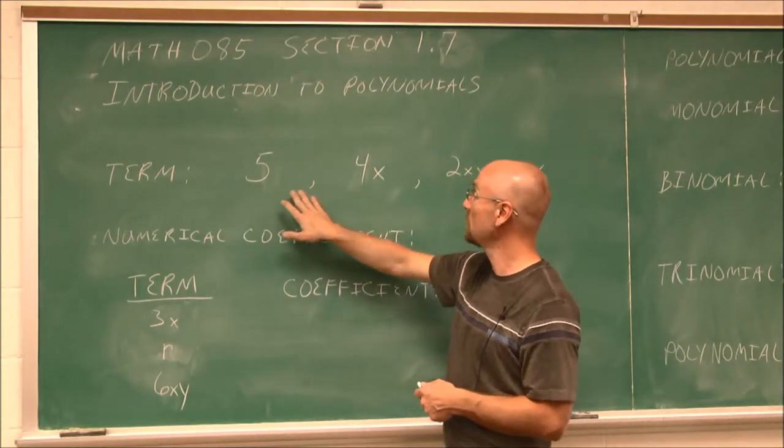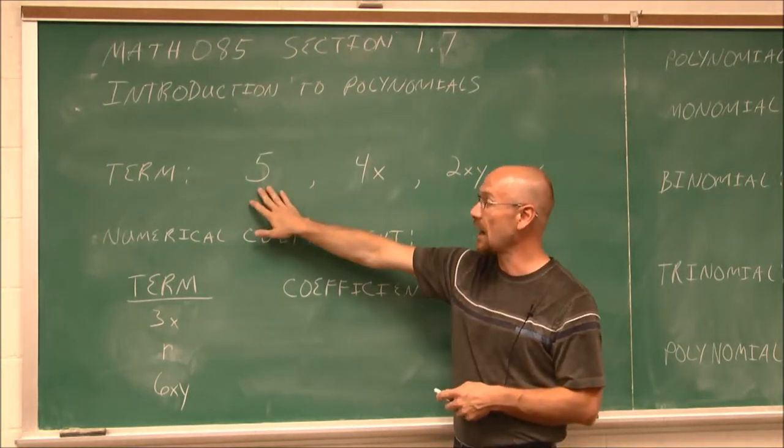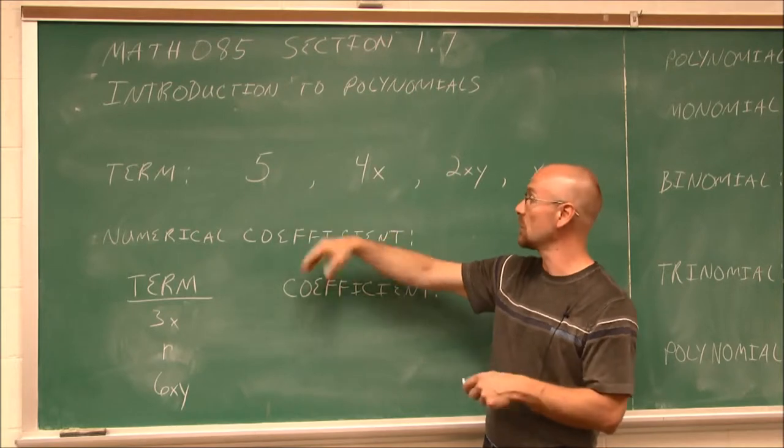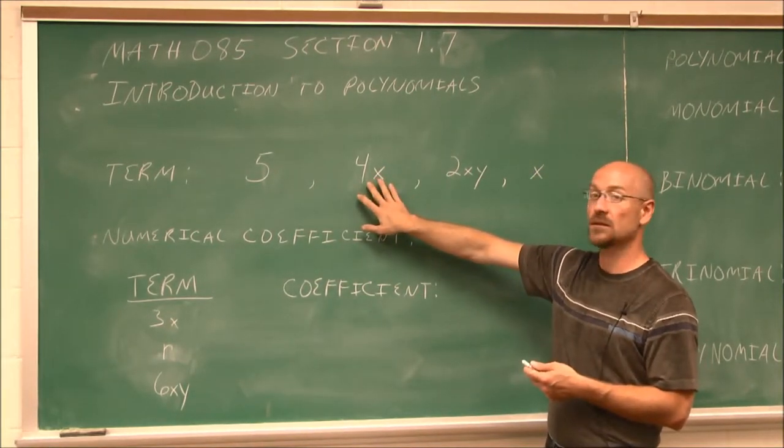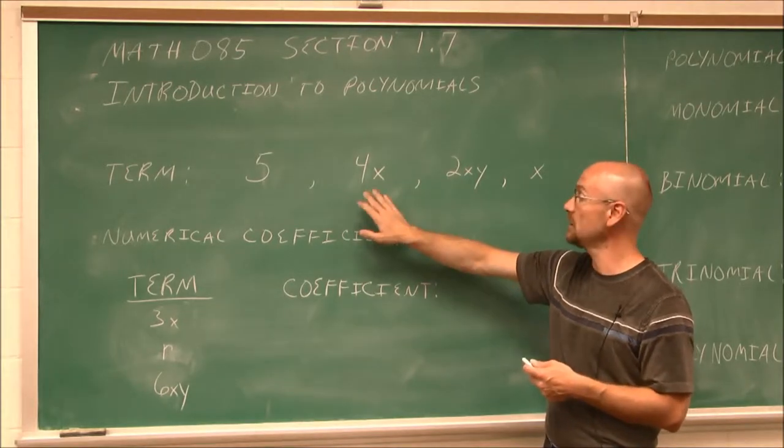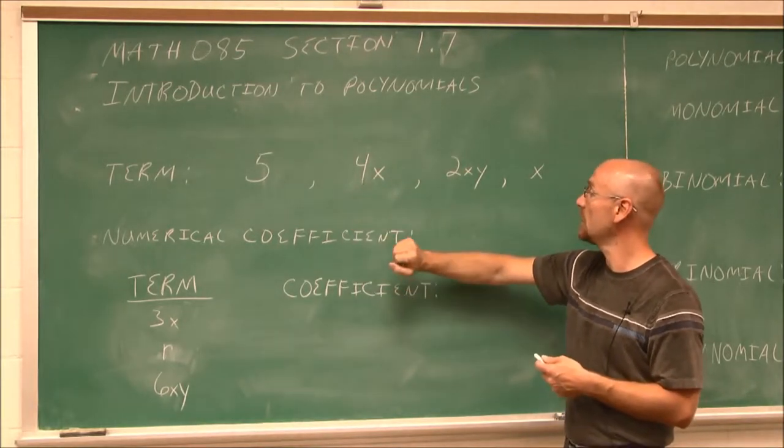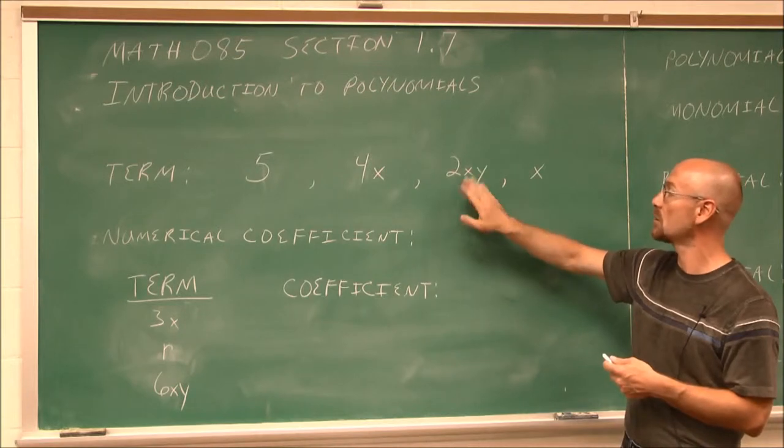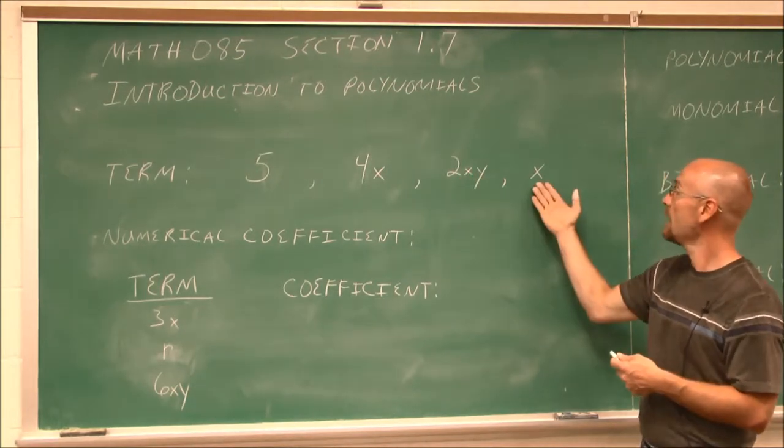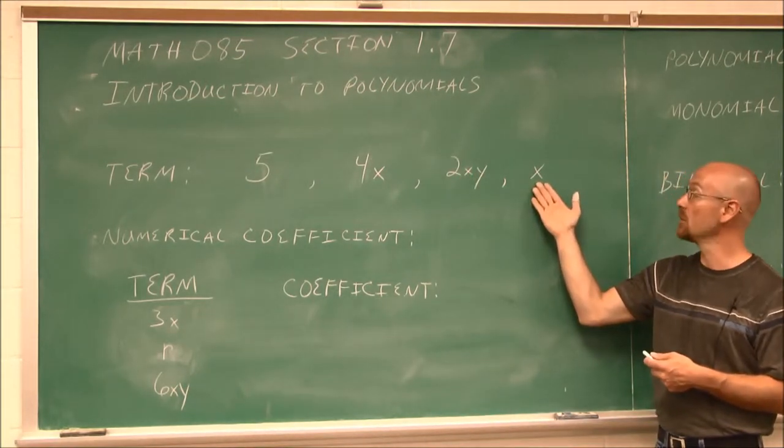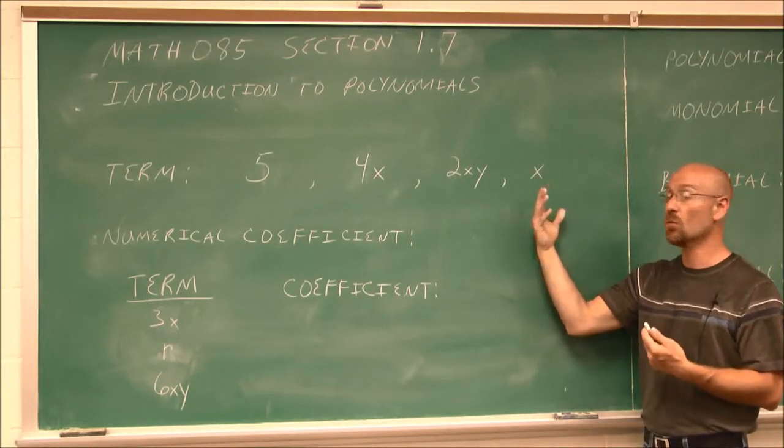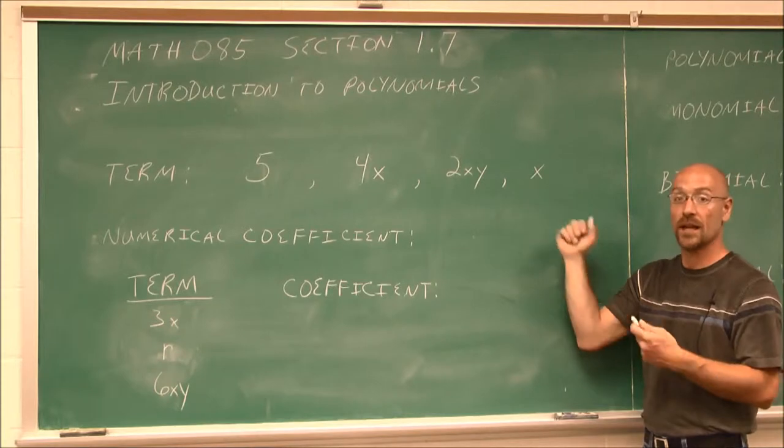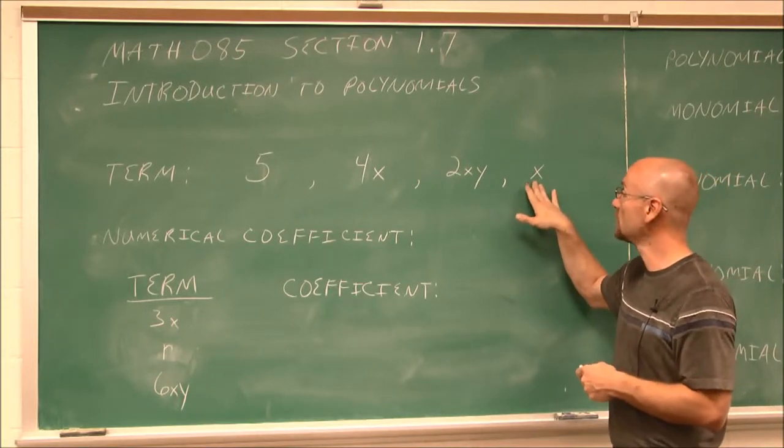So if we look, here's an example of some terms. We have 5. That's just a number. It's a term. We have 4x, and if we recall variables, 4 times x. So this is a term by itself. Here we have 2 times x times y. The term is 2xy. And then we have just an x. Well, that x by itself, its coefficient is actually 1, that number in front of it. We assume we have 1. So it is a term.